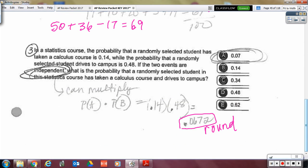All right, number three, they said that these two events are independent. And so, if those two events are independent, the probability of one of them and the other one happening, and is multiplication, so the probability of them both happening you can just multiply. It came out to 0.0672, but you rounded it to 0.07.